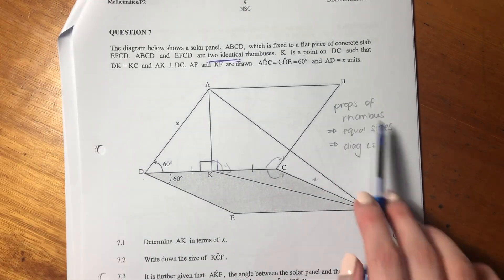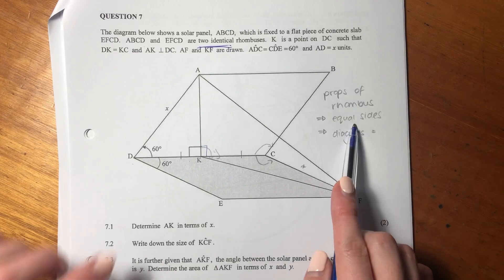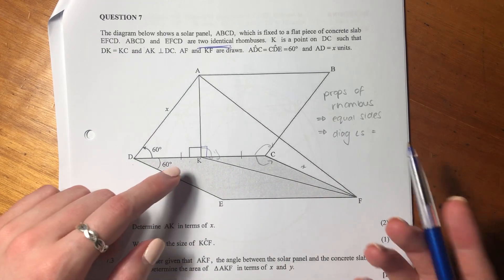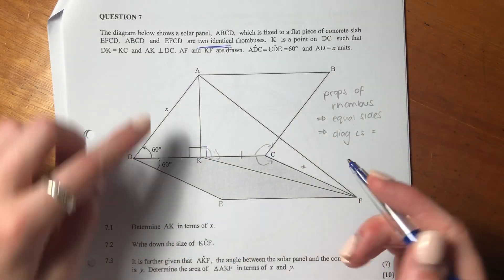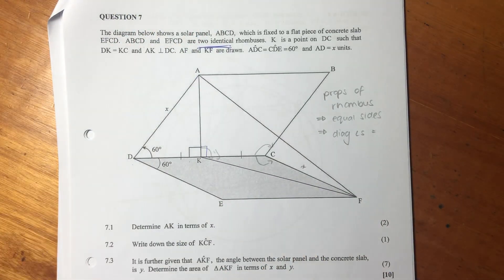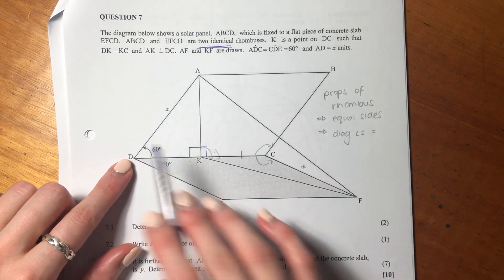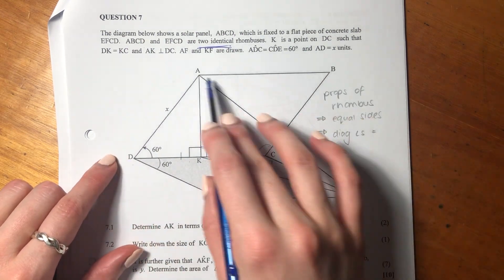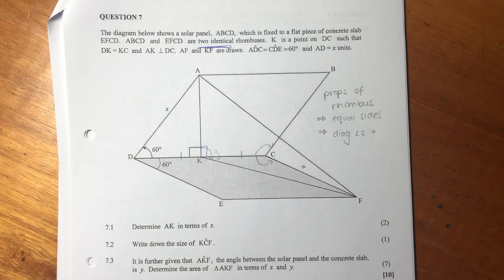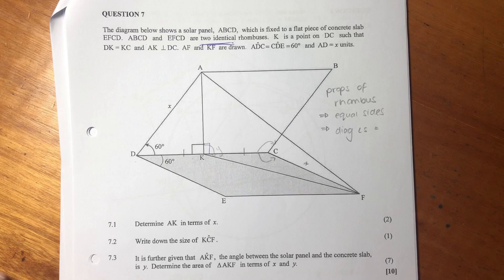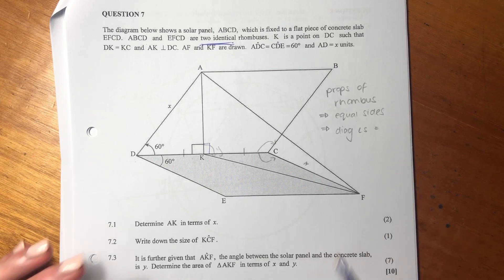I've put some properties of rhombuses over here. We know they have equal sides because a rhombus is just a square that's been slanted. All the sides are the same length and diagonal angles are equal. We're going to have to draw on these properties in answering our questions.